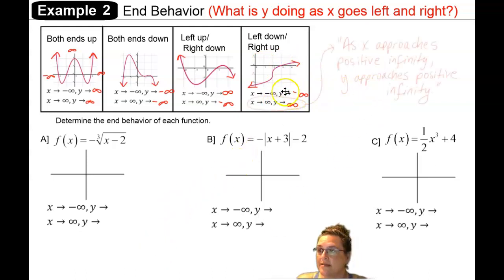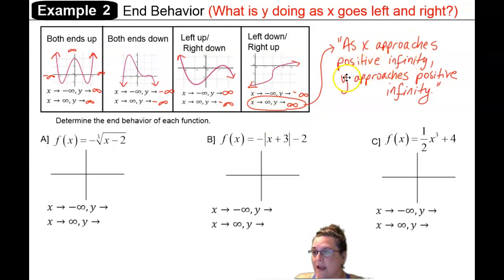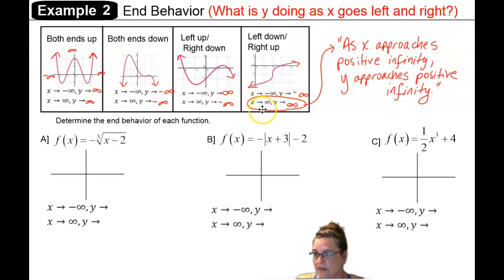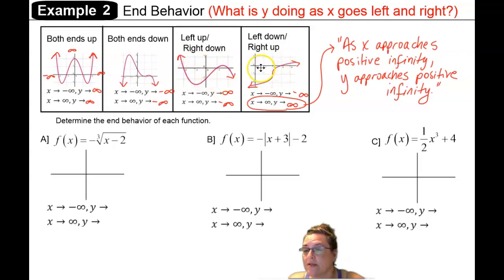This notation reads exactly as I've been saying across these examples. The notation 'x arrow infinity, y arrow infinity' is saying as x approaches positive infinity, y approaches positive infinity — meaning as x heads to the right, y is heading up. When we're talking about end behavior, we're not concerned at all with what's happening in the middle of these polynomials. We only attend to the extreme left and the extreme right behavior of the graph.